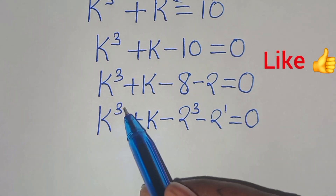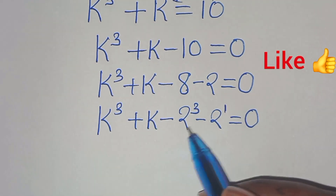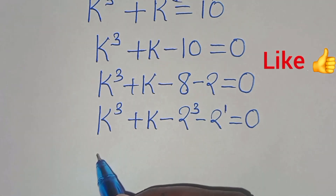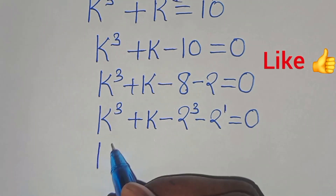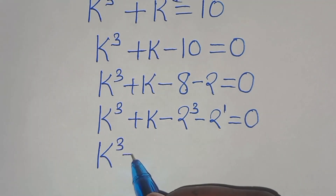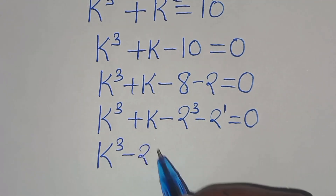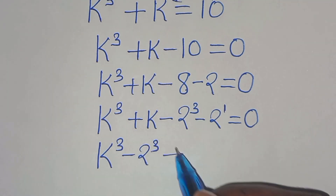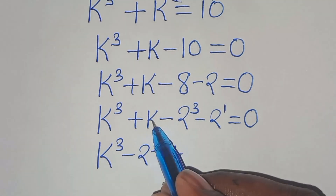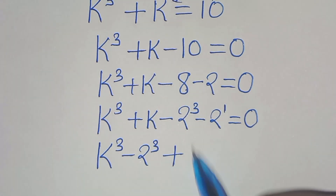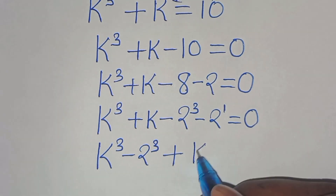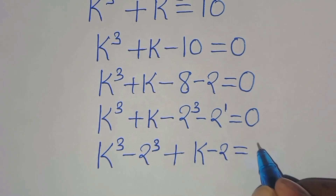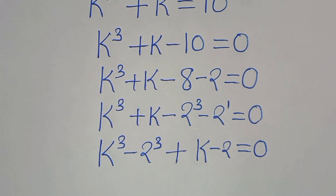So we have k to the power of 3 here and 2 to the power of 3 here, so we can combine this as k to the power of 3 minus 2 to the power of 3, then plus, here we have k minus 2, so we have k minus 2, this is equal to 0.